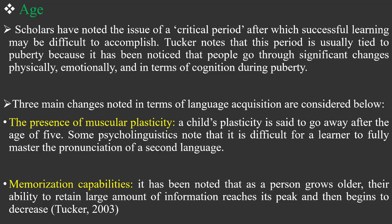In this factor of age, there are three main changes noted in terms of language acquisition. These are considered below. The first is the presence of muscular plasticity. A child's plasticity is said to go away after the age of five. Some psycholinguists note that it is difficult for a learner to fully master the pronunciation of a second language.